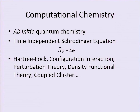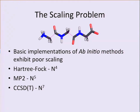So what's the problem? The problem is what's called the scaling problem. All of these methods scale very poorly. Hartree-Fock scales formally as N^4, where N is roughly our system size. MP2 scales as N^5. CCSD(T) — coupled cluster with singles, doubles, and perturbative triples — scales formally as N^7. So if we double our system size, it takes 128 times as long to do the calculation.